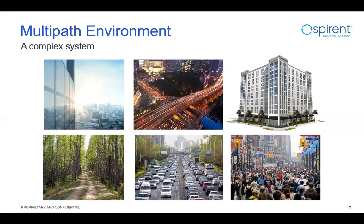It may be worth looking at building geometries and physical materials as the major contributing factor towards multipath effects. We call this the first-order multipath effect, contributed by building geometry and physical materials. The second-order multipath effects are more significant from traffic, street furniture, and other sources in the environment.